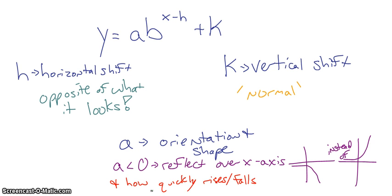K still controls the vertical shift, normal. So, if it says plus 2, it is moving up 2. This will also move our asymptote. So, if it says plus 2, we have shifted that asymptote up 2.